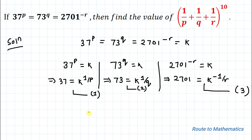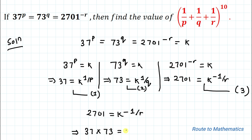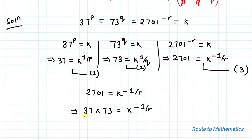From equation 3 we have 2701 = k^(−1/r). One key observation is that 2701 can be written as 37 multiplied by 73, so 37 × 73 = k^(−1/r).